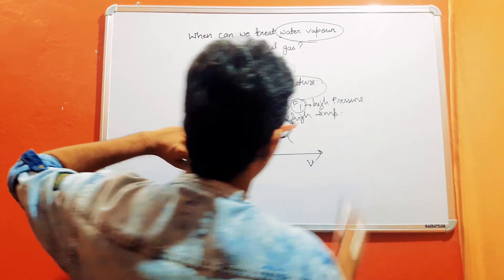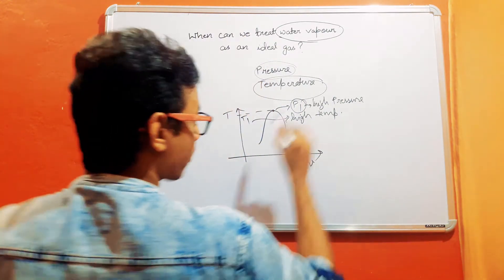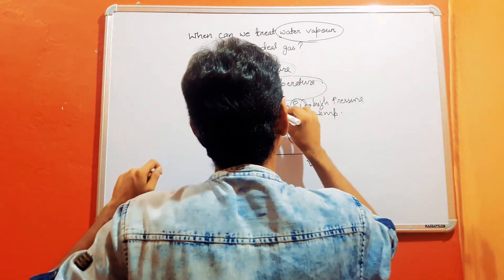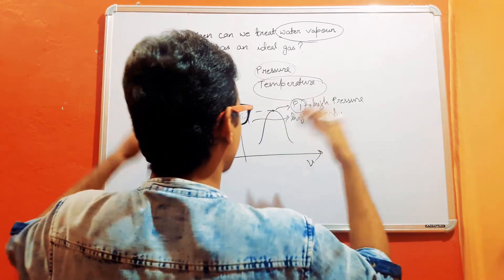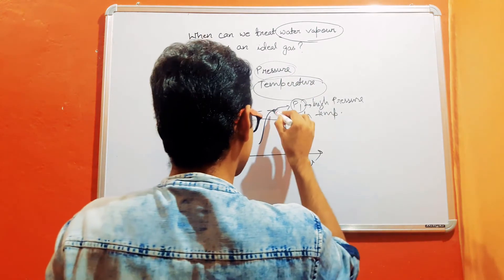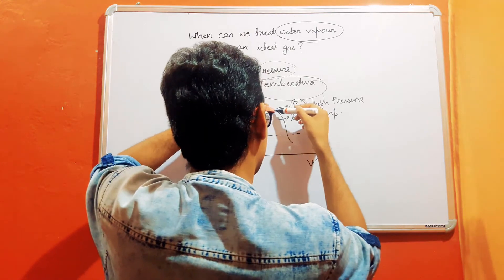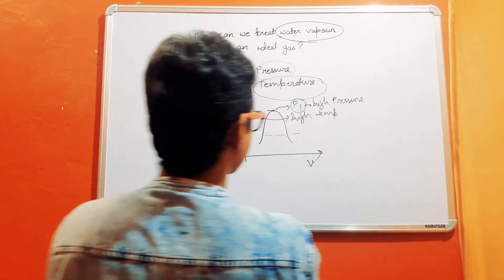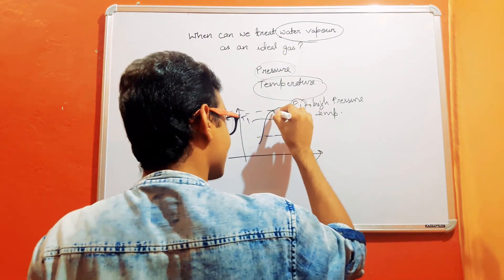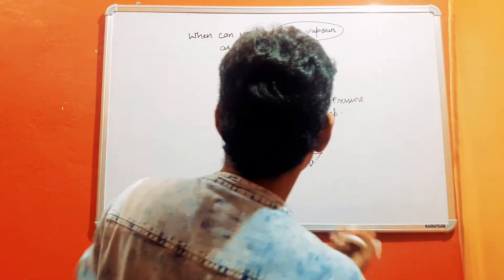If we are considering any gas, first we look at the critical point of that gas — that is, the critical point pressure and critical point temperature. Relative to this critical point, we determine whether the pressure and temperature are high or low. If the pressure is sufficiently lower than the critical point pressure, we say the pressure is lower; if the temperature is at or higher than the critical point temperature, we say the temperature is higher.